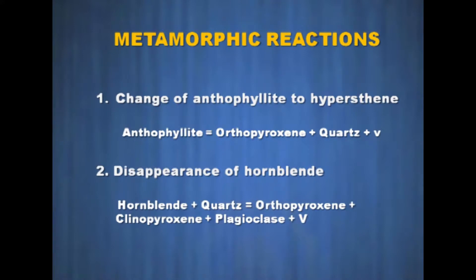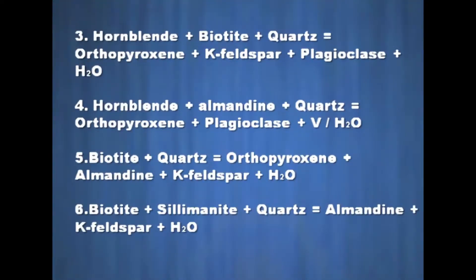A number of metamorphic reactions have been suggested to account for the diagnostic appearance of orthopyroxene. Reaction 1: change of anthophyllite to hypersthene — anthophyllite gives rise to orthopyroxene plus quartz plus vapor. Second reaction, disappearance of hornblende: hornblende plus quartz gives rise to orthopyroxene plus clinopyroxene plus/minus plagioclase plus vapor, which marks the beginning of granulite facies. Third reaction: hornblende plus biotite plus quartz gives rise to orthopyroxene plus protofelspar plus plagioclase plus water. Fourth reaction: hornblende plus almandine plus quartz gives rise to orthopyroxene plus plagioclase plus vapor.